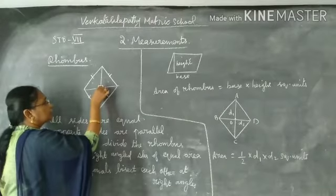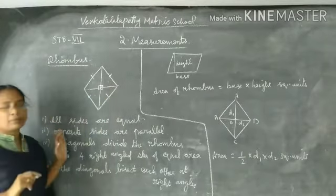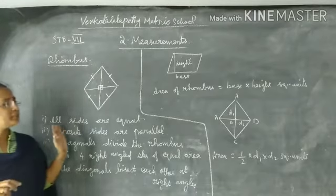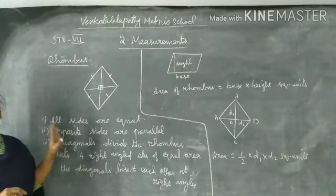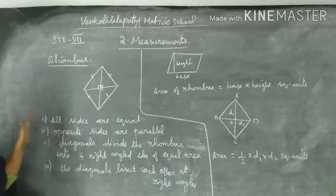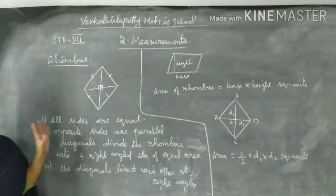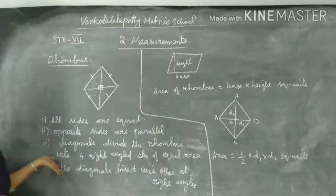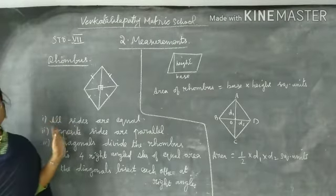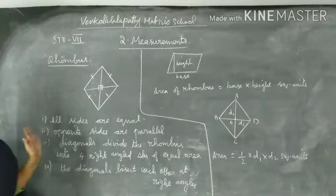The diagonals bisect each other at right angle. So rhombus has four sides, four sides are equal, opposite sides are parallel, diagonals bisect each other and form four right angle triangles of equal area. The diagonals bisect each other at right angle. This is the property of rhombus.